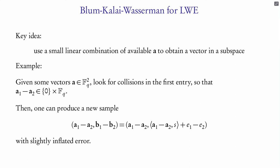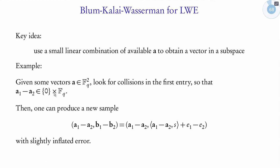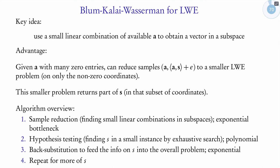That's the core idea: reduce your Ring LWE problem to a smaller dimension at the cost of inflating the error. You only get a piece of s — for example, if the combination has a zero in the first entry, the first coordinate of s drops out of the new problem. The big-picture algorithm has three phases: sample reduction (finding small linear combinations, exponential), hypothesis testing (finding s in the smaller problem, exponential), and back-substitution (feeding info on s back to the full problem, exponential). Then you repeat for another chunk of s.